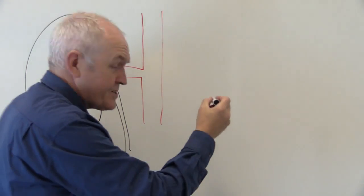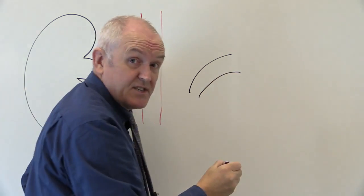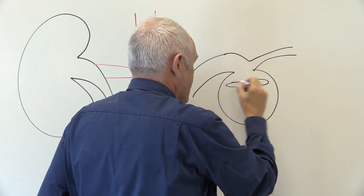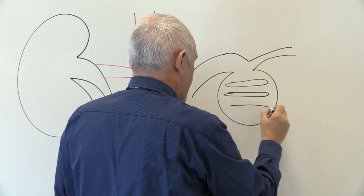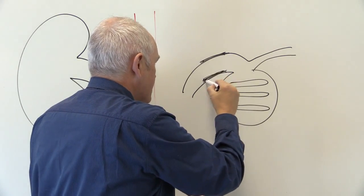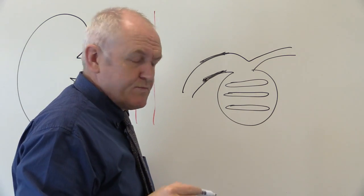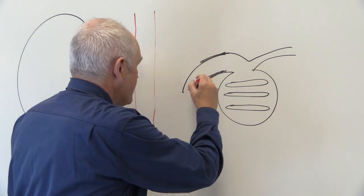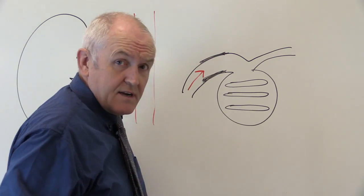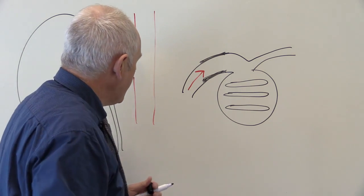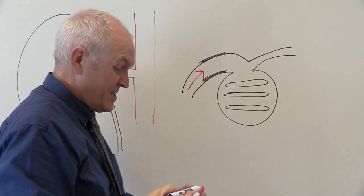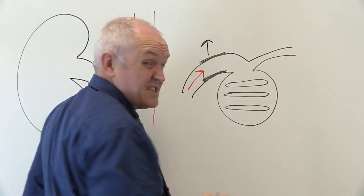There is an afferent arteriole taking blood into the glomerulus, and here we have the glomerulus which is the ball of capillaries. In the walls of the afferent arteriole there are specialized smooth muscle cells, and if the pressure of the blood is reduced, that's detected in the walls of the afferent arteriole. Those specialized smooth muscle cells respond by releasing an enzyme called renin.